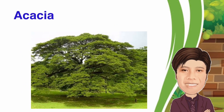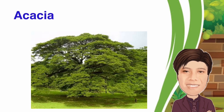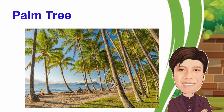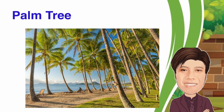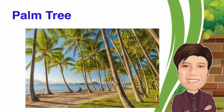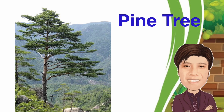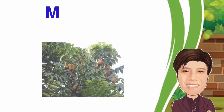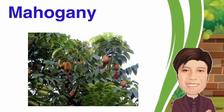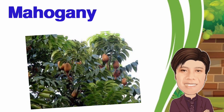Acacia is a large genus of shrubs. It comprises a group of plant species native to Africa and Australia. Palm tree — a botanical family of perennial plants. Their growth form can be climbers, shrubs, trees, and stemless plants, all commonly known as palms. They are flowering plants. Pine tree is any conifer in the genus Pinus of the family Pinaceae. Mahogany is a species native to southern Florida in the United States and islands in the Caribbean, including the Bahamas, Cuba, Barbados, Jamaica, Dominican Republic, and Haiti.